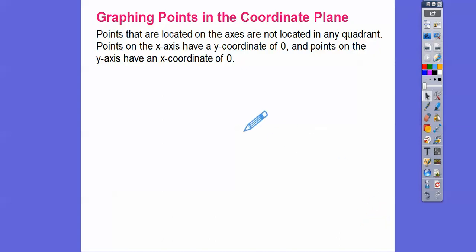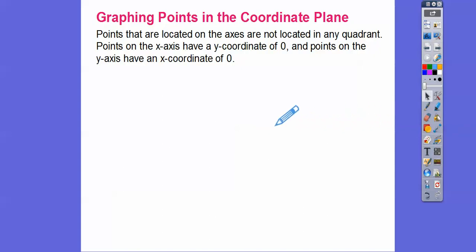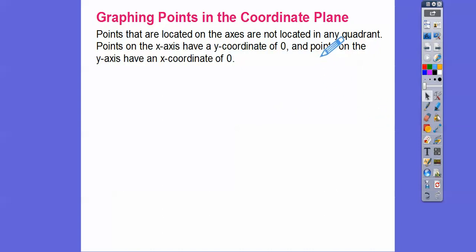This is the X-axis — when Y equals zero — so like two comma zero, or negative four comma zero. If it's on the Y-axis, it would be zero comma some number.